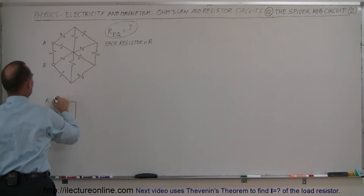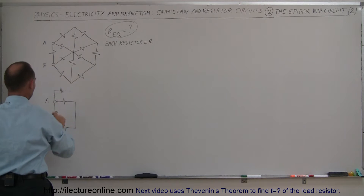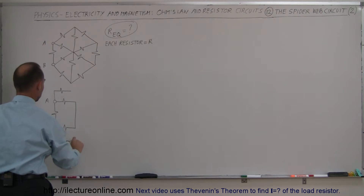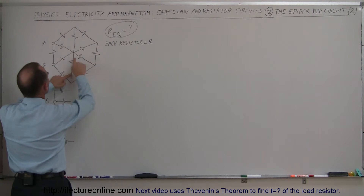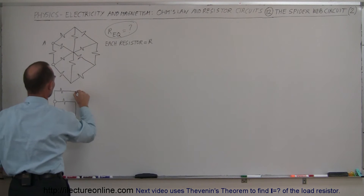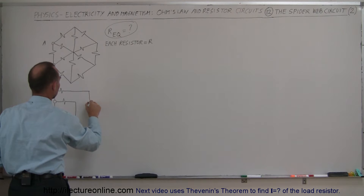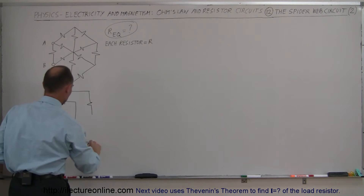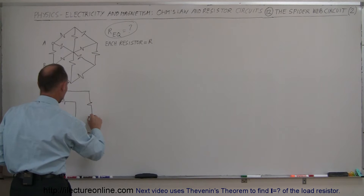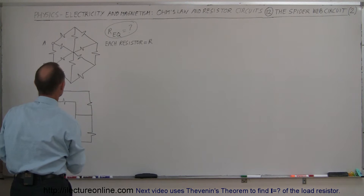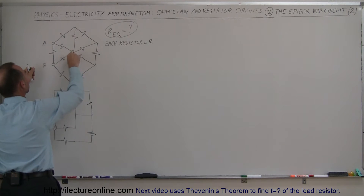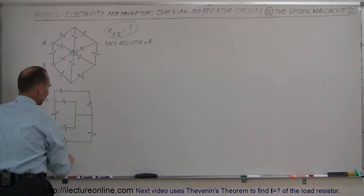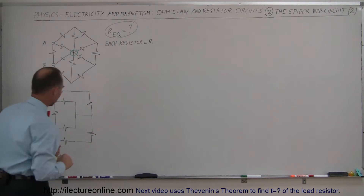Going up one, we have this resistor right here, and going down one, we take this resistor and draw it right here. Notice that we have these two resistors that come into the center — I'm going to draw those right here, one and another one down here, then connect those two. Notice that all these are connected right here at the very center, and I'm going to take the center and spread it out like this.